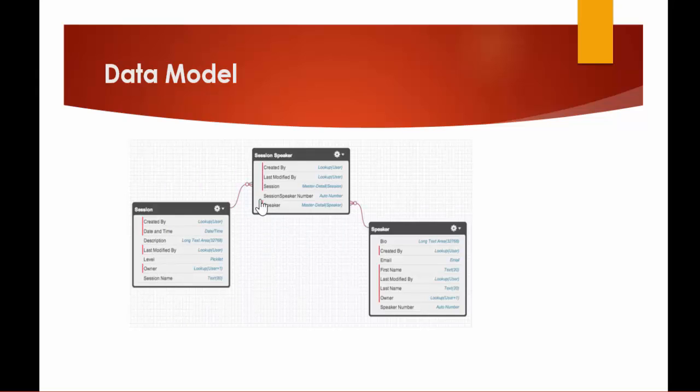This particular session will be taken by a particular speaker. So we will be creating another custom object which will have information about the speaker: first name, last name, email addresses, bio, etc. Later on, we will also be adding a field to capture the photo of that speaker. We will also be adding a junction object because we want a relationship between a session and a speaker, and this is going to be a many-to-many relationship because one session can be given by multiple speakers and one speaker can give multiple sessions.